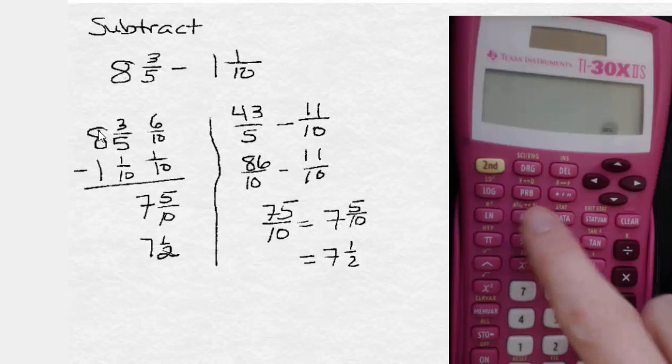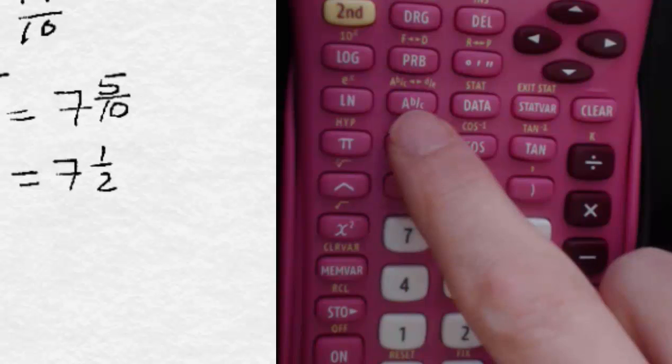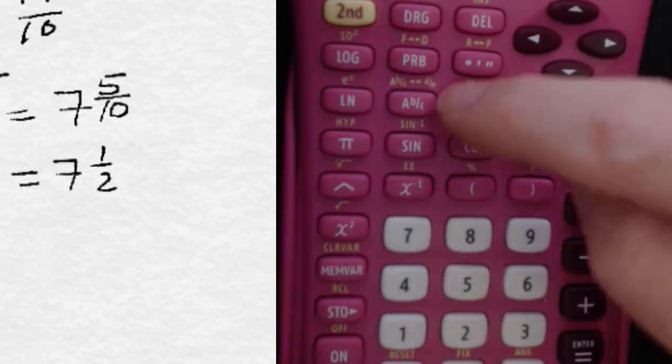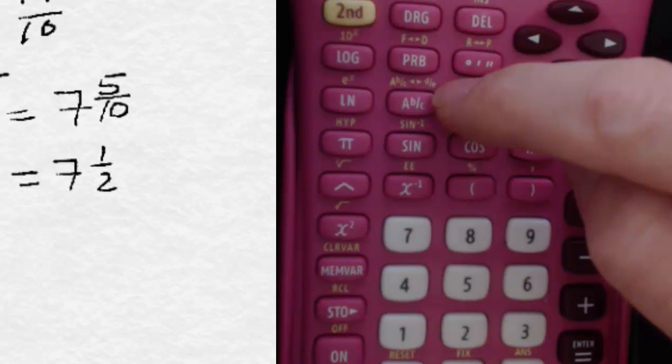You can see the key right here that has a capital A with a B over C. This is a mixed number. Above it, you can see where we can convert a mixed number to an improper fraction, to D over E.